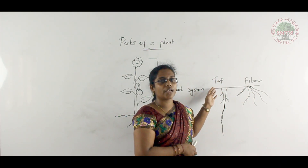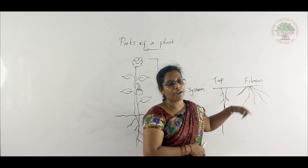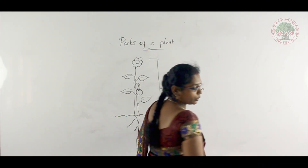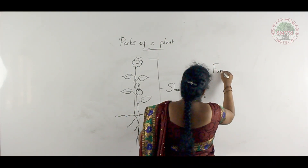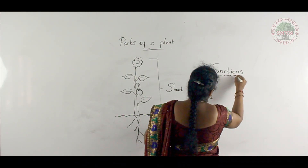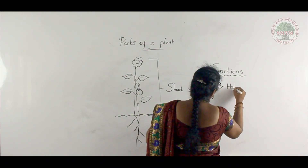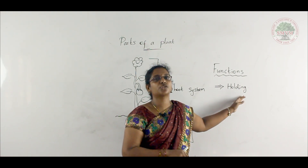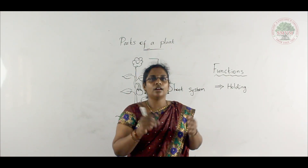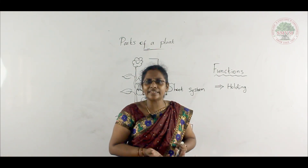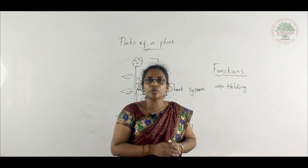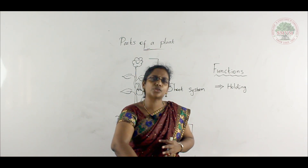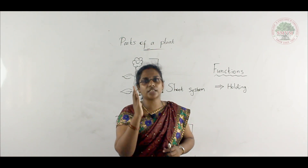There are two different kinds of root system: tap root system and fibrous roots. The first and foremost function of roots is helping in holding the soil firmly. If there were no roots, it would not be easy for a plant to stand still. Roots go through the soil and hold it firmly so the plant can stand straight.